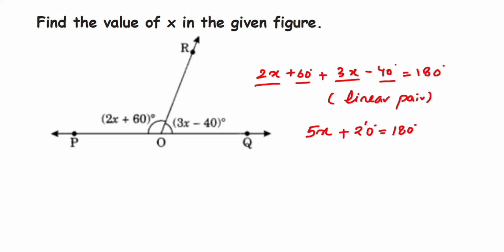Now transpose this 20 to the other side. So 5x is equal to 180 degrees minus 20 degrees. So 5x is equal to 160 degrees. Now this 5 is in multiplication with x, so we are going to transpose this to the other side. It comes in division.